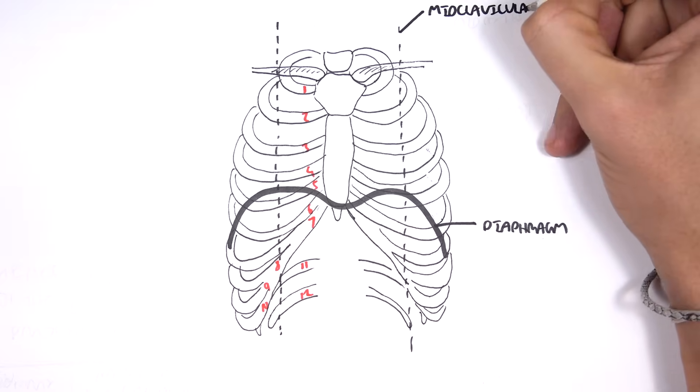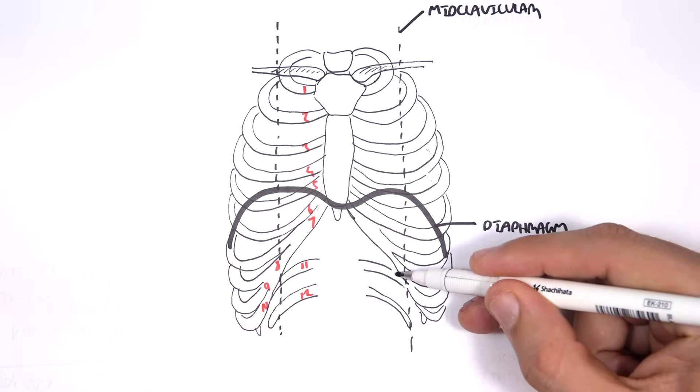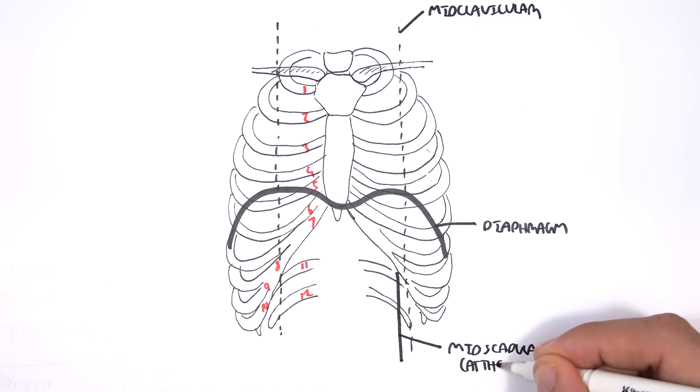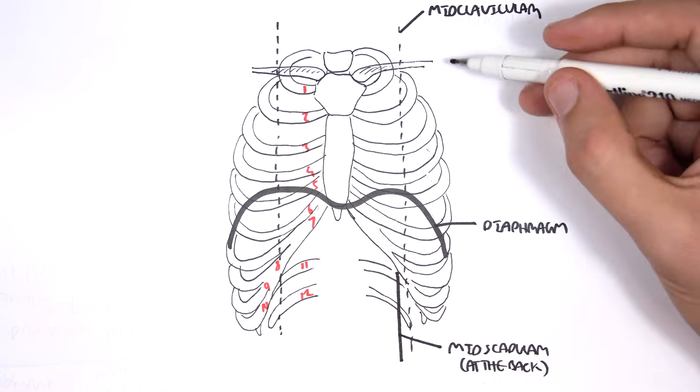There is also mid scapula, which is a landmark at the back, the middle of the scapula. The mid axillary is the landmark for the lateral aspects of the thorax along the armpits.